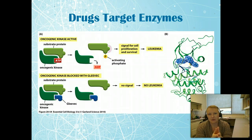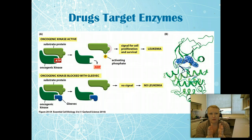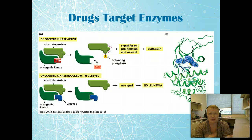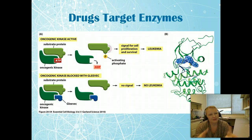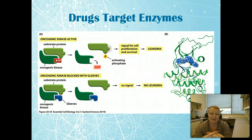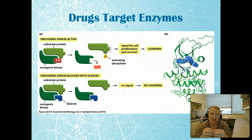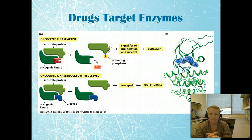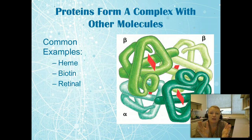Drugs target enzymes — it's one of the main pharmacological targets, along with receptors, which are also mainly proteins. For example, Gleevec, an anti-cancer drug, binds to an oncogenic kinase and turns it off. It sits right in the active site so ATP can no longer bind, the signal for cell proliferation can't happen, and the leukemia is turned off.